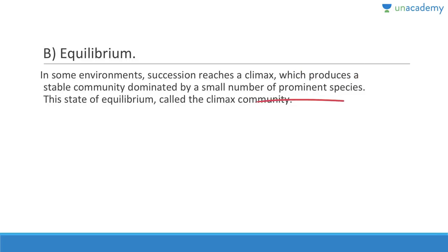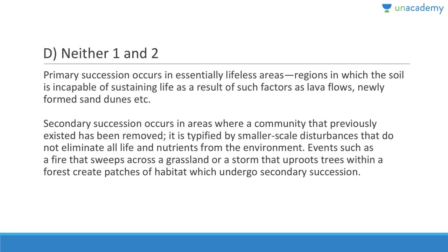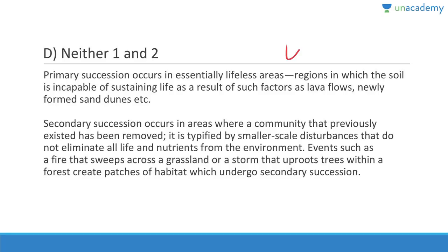Question thirty-five: Primary succession occurs in an area where a community that previously existed has been removed — that is wrong. Secondary succession occurs in an essentially lifeless area — also wrong. Answer is D, neither one nor two — they have flipped the definitions. Primary succession occurs in an essentially lifeless area where there was no life — for example, regions where soil cannot sustain life due to lava flow or newly formed sand dunes. Secondary succession occurs in areas where a community that previously existed has been removed.